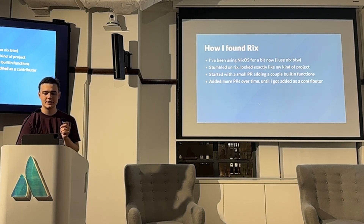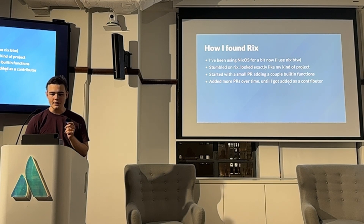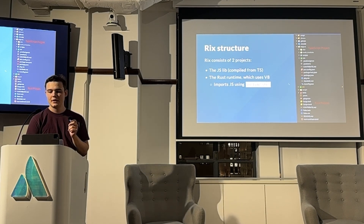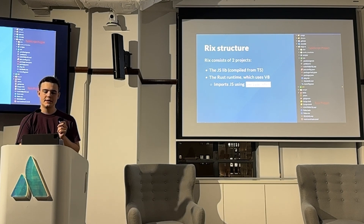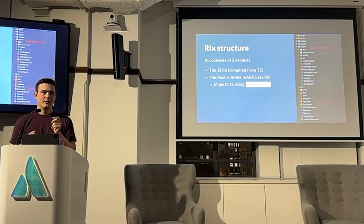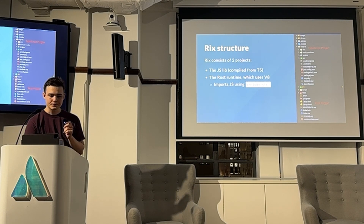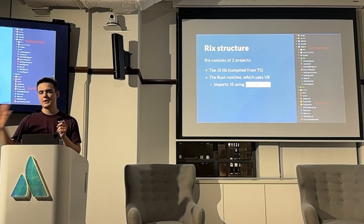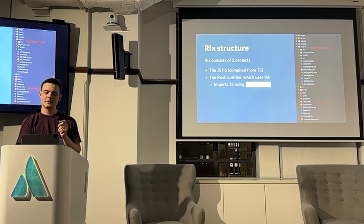Over time I did a couple more pull requests and he added me as a contributor — he being the original creator of this tool. The Rix project structure is a monorepo where there is the runtime: nix.js-rt for runtime. It is the JavaScript runtime that describes the actual type system of Nix under the hood — the classes we use in order to transpile into JavaScript later. After this gets compiled using Yarn or NPM, we use TSL to compile it from TypeScript into a single JavaScript file, which then gets imported using include_str in Rust directly into V8.